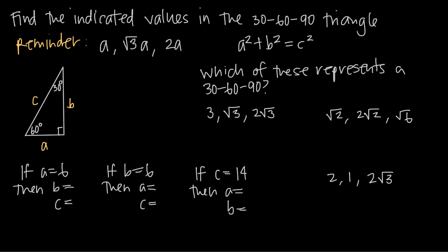In this video, we're talking about 30-60-90 triangles, which are a very special case of triangle. When we say 30-60-90, what we're referring to are the three interior angle measures of the triangle.